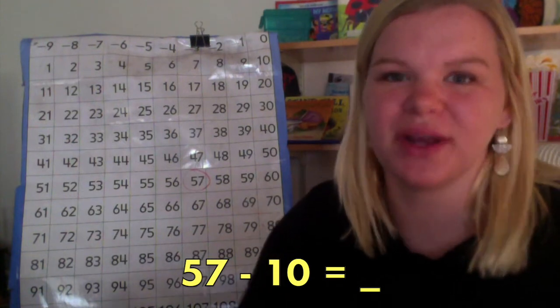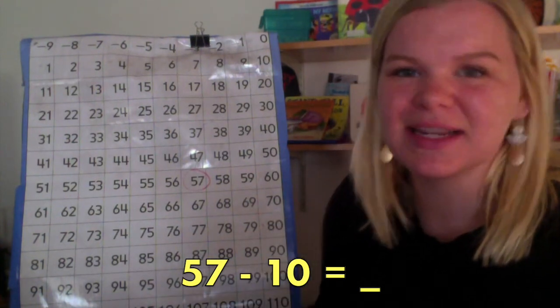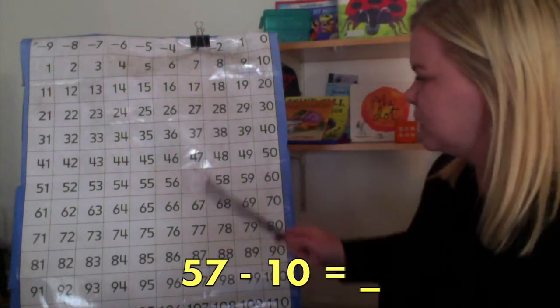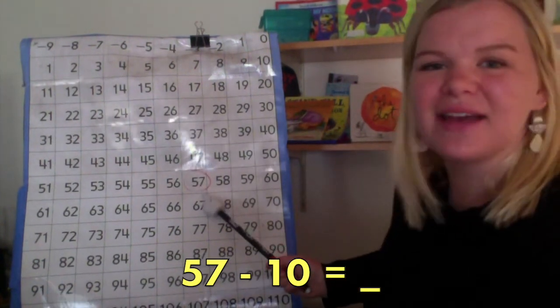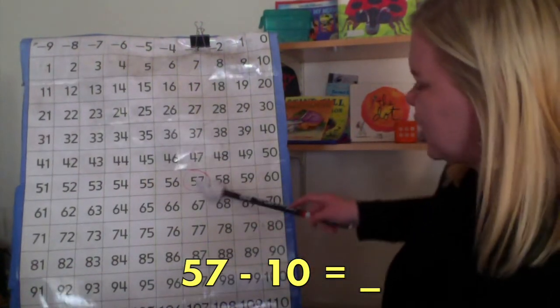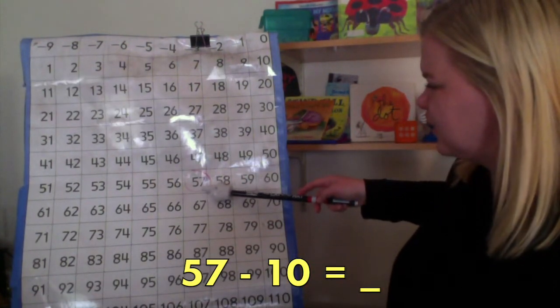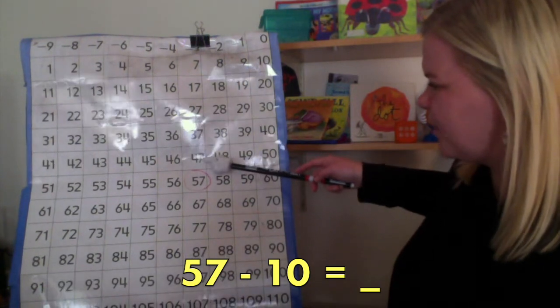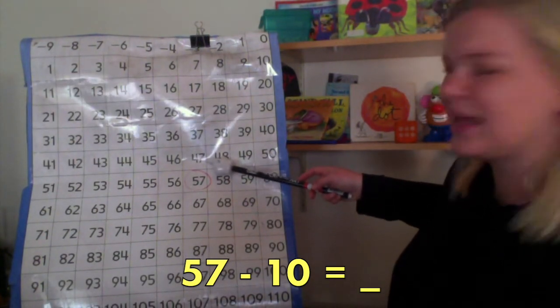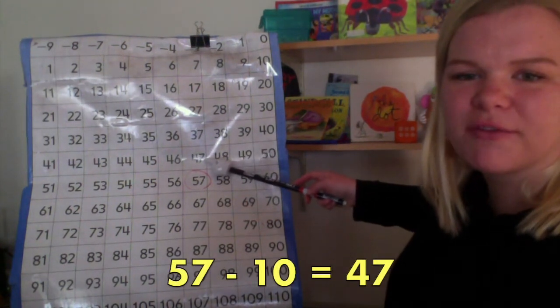Remember, the trick for adding or subtracting 10 is to move up or down the number grid. So, if I start at 57, I need to count back 10. So, I start at 57. One hop up means minus 10. So, 57 minus 10 equals 47.